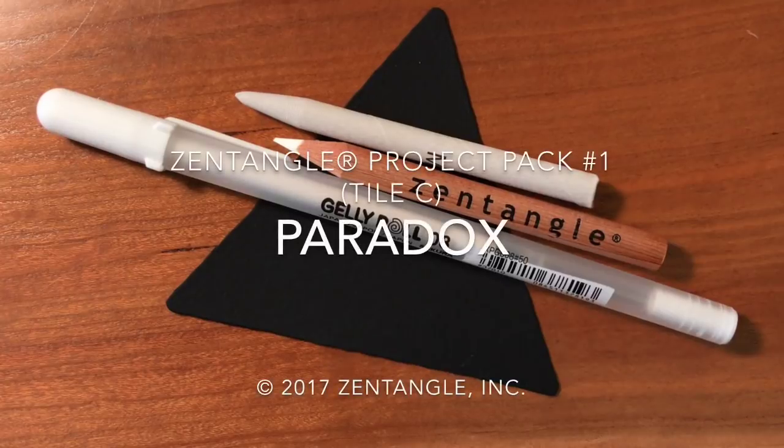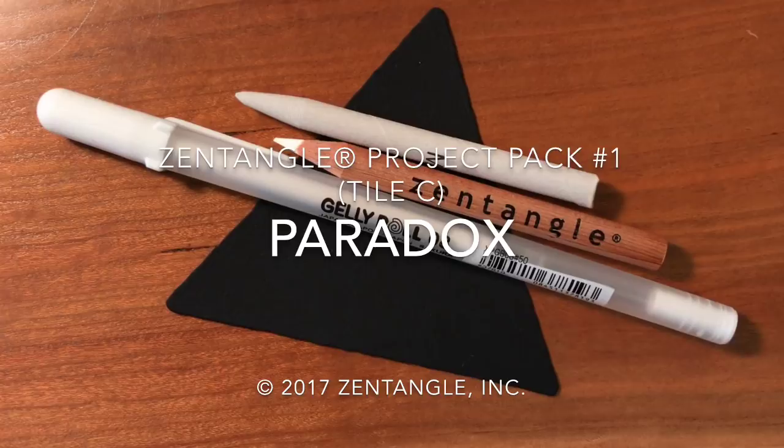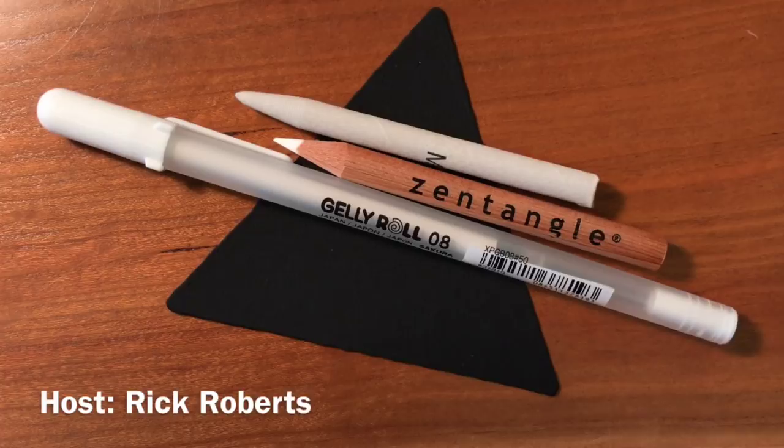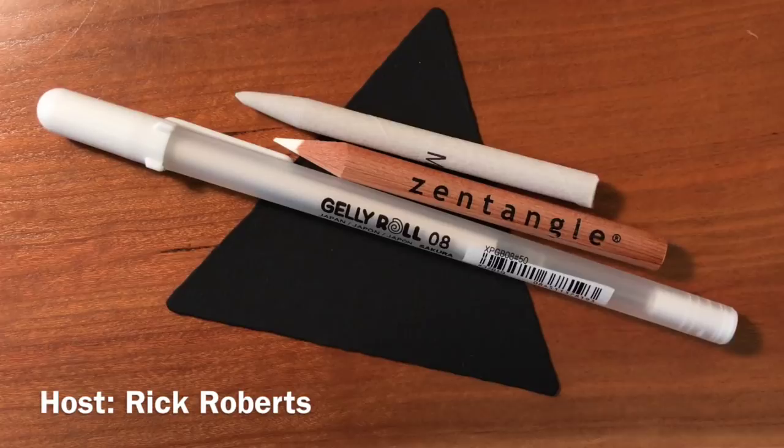Hi, this is Rick and on this project pack we're going to use a black 3Z tile, a 08 jelly roll white pen, a white charcoal pencil, and a tortillon that is reserved for white charcoal.